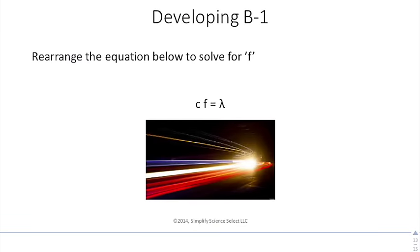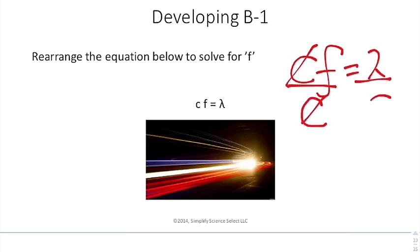Let's rearrange the equation below to solve for F. You start off with CF equals Lambda. And I want to solve for F. I see that C and F are multiplied by one another. So now I take this and I divide this side by C. When I do that, I've now isolated F, but I have to do it to the other side to maintain equivalence. So you have F is equal to Lambda over C.